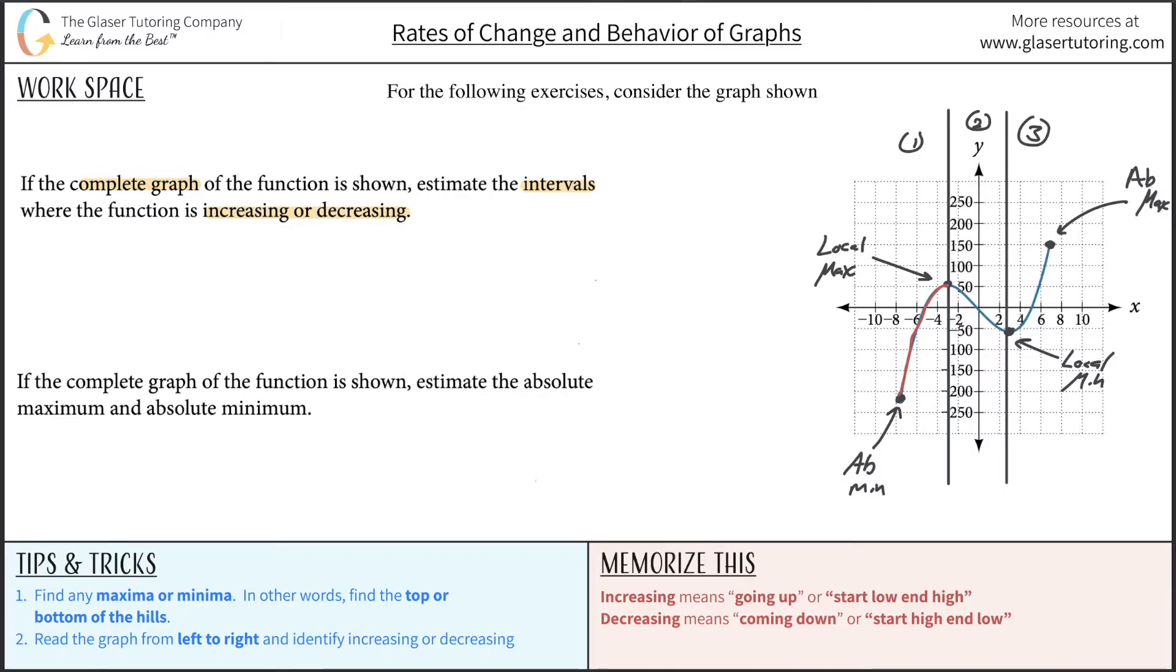So we have to now label whether this interval here is increasing or decreasing. So you read the graph from left to right. We're going to start at this point, that's the leftmost point of that interval, and then this is the rightmost point of that interval. Notice we started low and we ended high. Therefore, that sounds like it's increasing to me.